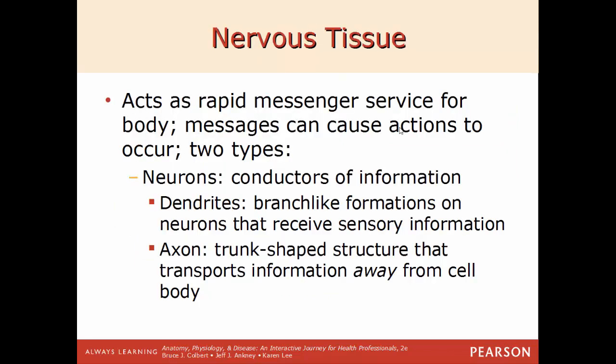Next, nervous tissue. This acts as a rapid messenger service for the body — how your brain talks to the rest of your body and vice versa. There are two main types of cells in nervous tissue. The main structural unit is the neuron, made up of various branches coming off a cell body. The axon carries information away from the cell body — A for axon, A for away. The branches that receive information from other neurons are called dendrites.